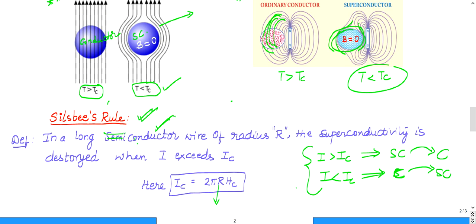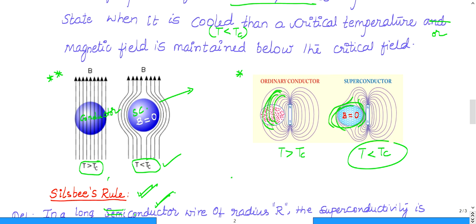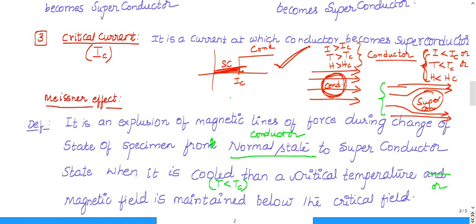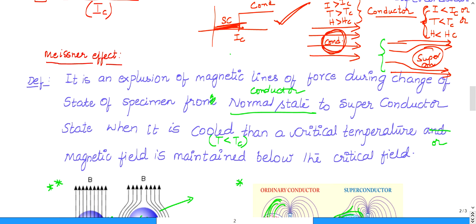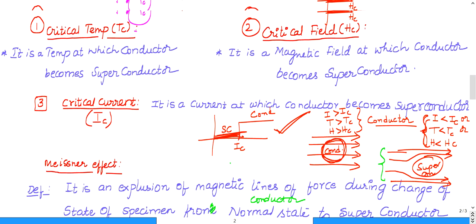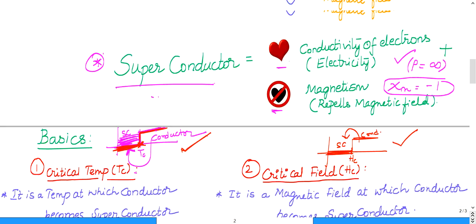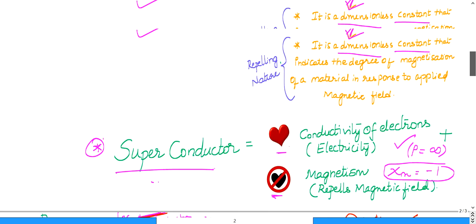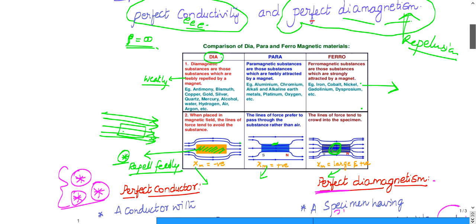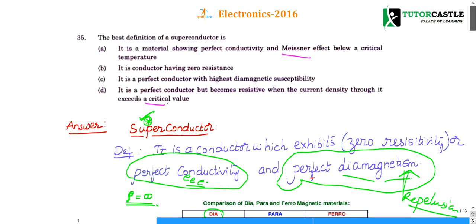Meissner talked about only temperature and magnetic field, giving critical temperature and critical field but not critical current. Now that you understand superconductors, the Meissner effect, critical temperature, critical field, critical current, and Silsby's rule, you will be able to answer this question.